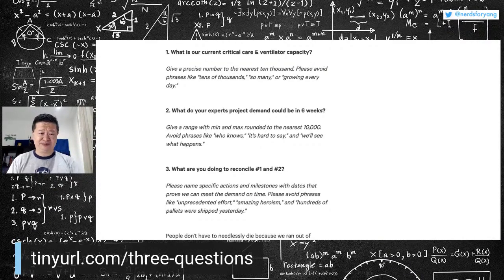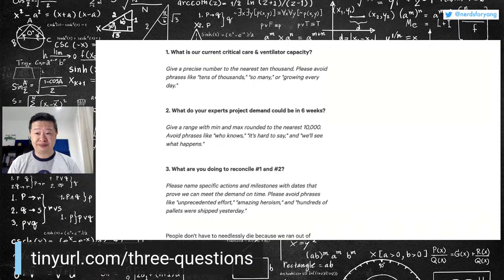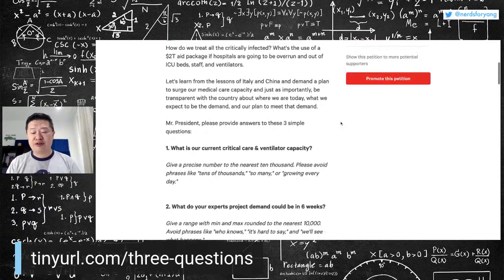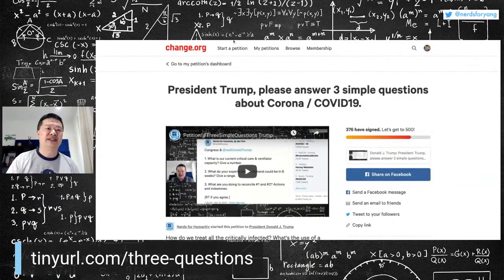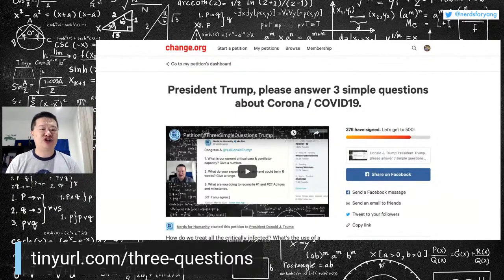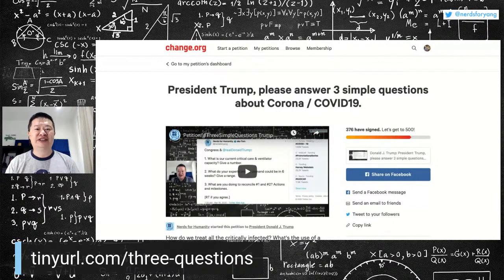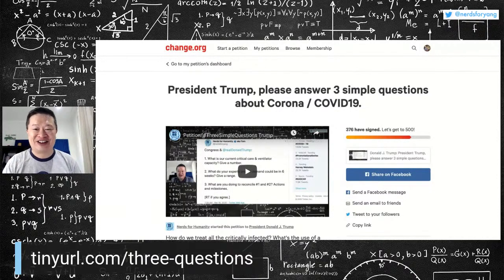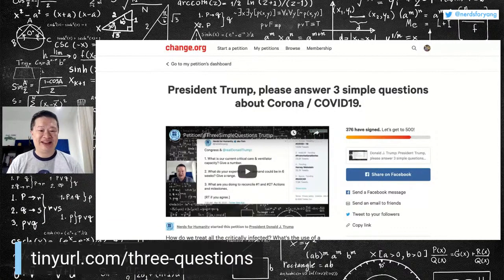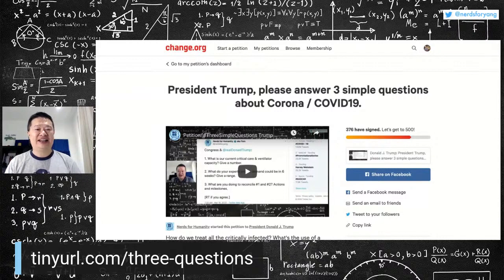The URL of this is tinyurl.com slash three dash questions. So you go there, tinyurl.com slash three dash questions. And right now we've got 376 people that have signed it. We could probably get to 500 if everybody listening to this right now goes to tinyurl.com slash three dash questions and signs that petition.